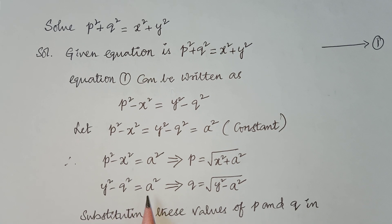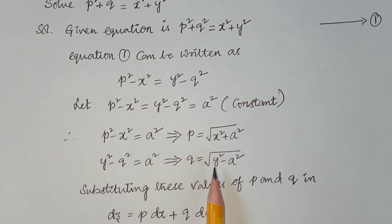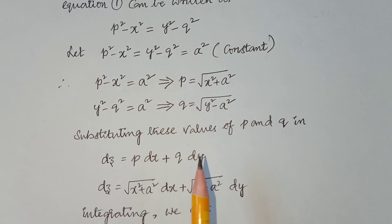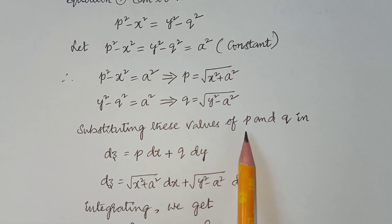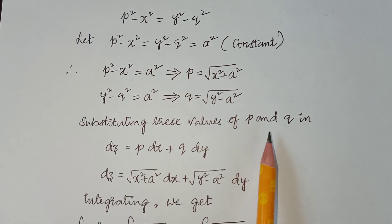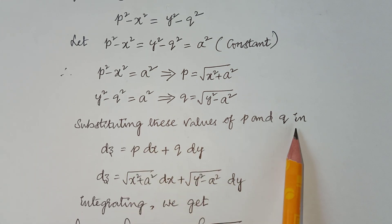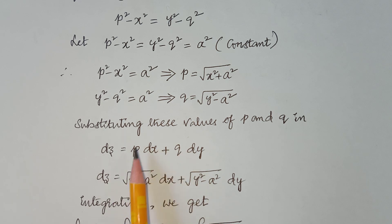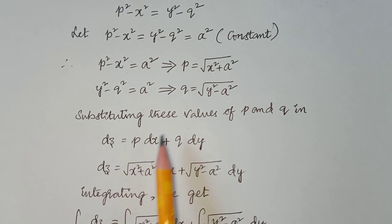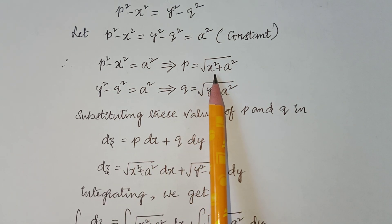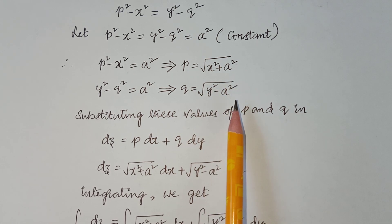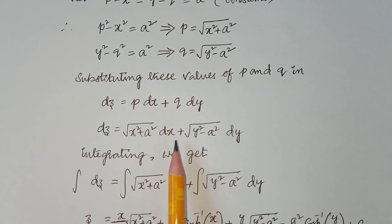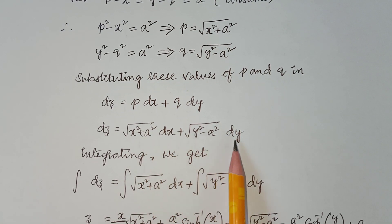From p² − x² = a², we get p = √(x² + a²). From y² − q² = a², we get q = √(y² − a²). Substituting these values of p and q into dz = p dx + q dy, we get dz = √(x² + a²) dx + √(y² − a²) dy.